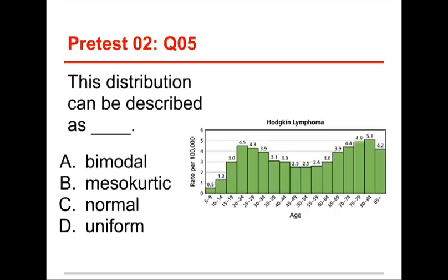Okay, question five. This distribution can be described as blank: bimodal, mesocurtic, normal, or uniform. Well, the answer to this one is bimodal.